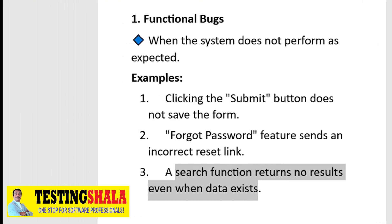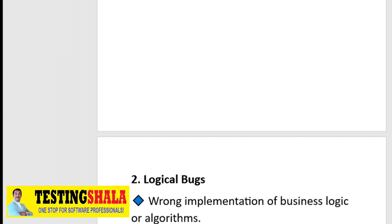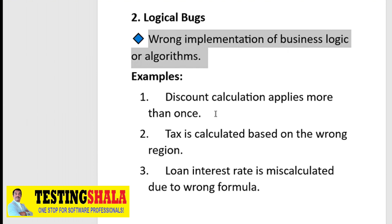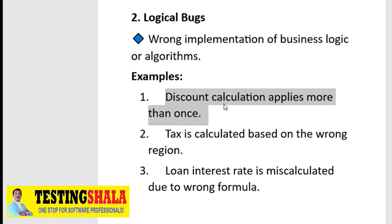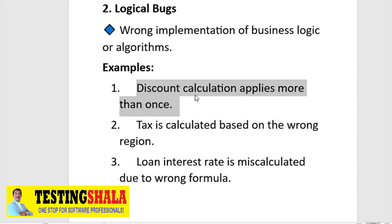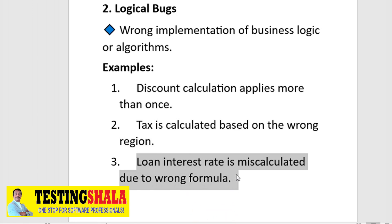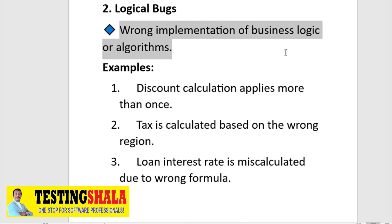The second type of bugs is logical bugs. We categorize these as logical bugs when the implementation is completely wrong in terms of business logic or algorithm. Examples include: discount calculation applies more than once when it should apply only once, tax is calculated based on the wrong region, or loan interest rate is miscalculated due to a wrong formula. All these come under wrong implementation of business logic or algorithm.